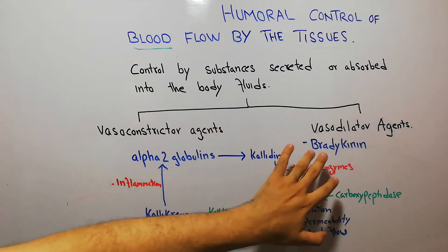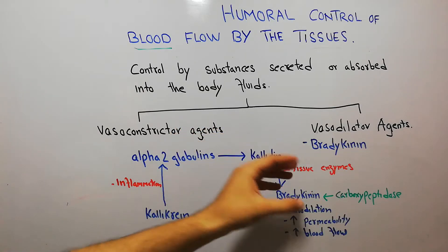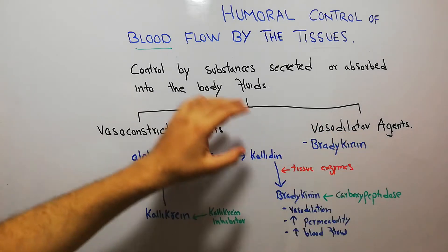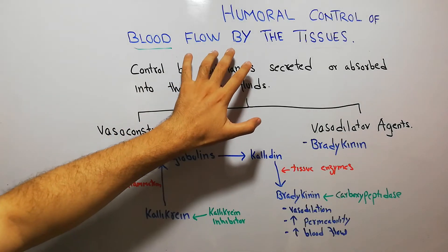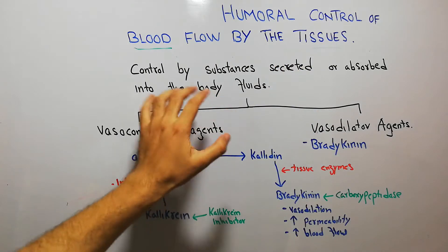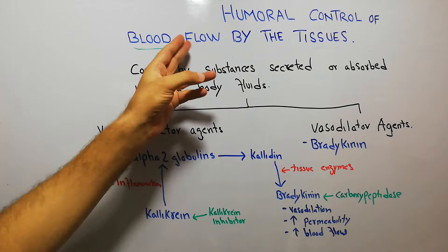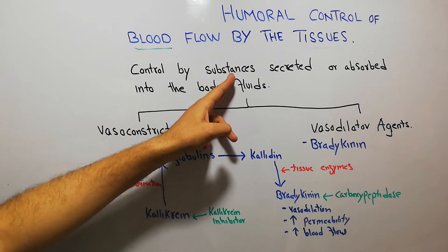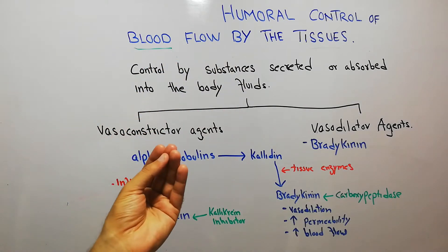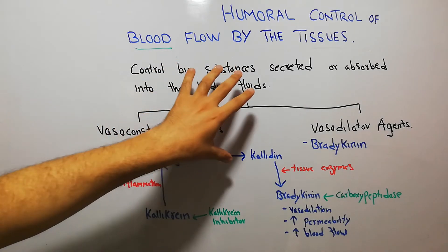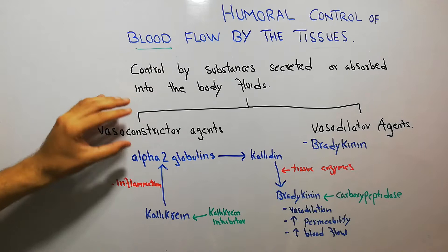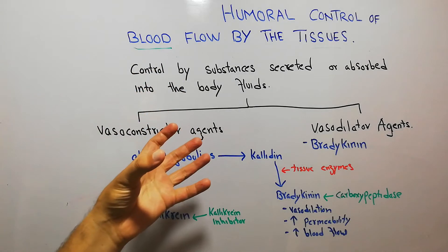Today we are going to discuss bradykinin — its formation, its different actions, and its role as a vasodilator in the control of blood flow. We are discussing humoral control of blood flow by the tissues, which means control of blood flow by different substances secreted or absorbed into the body fluids. These substances, enzymes, or hormones are classified as vasoconstrictor agents or vasodilator agents, controlling blood flow by constricting or dilating the blood vessels.